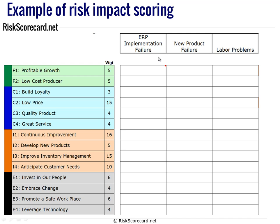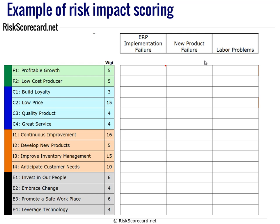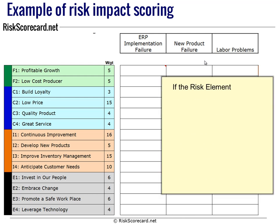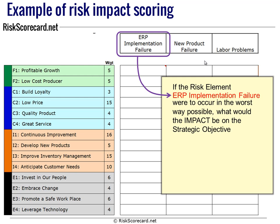In this example, let's say a small manufacturing company. One of their identified risks is the failure of their ERP implementation, another is new product failure, and another is labor problems. To begin assessing the risk impact, we need to ask ourselves: if the risk element — in this case, the ERP implementation failure — were to experience the worst-case scenario, as bad as it could possibly be, what would that impact be on the strategic objective of, in this example, F1 profitable growth?